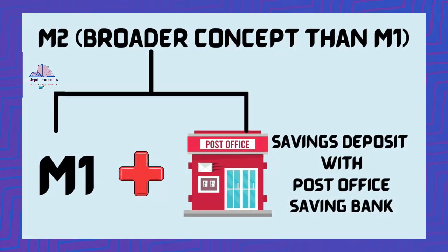The second measure of money supply is M2, which is a broader concept compared to M1. It includes M1 plus savings deposits with the post office savings bank. Post office savings banks do not provide the facility of withdrawal through checks; therefore, they cannot be included in demand deposits with banks, resulting in the evolution of M2 as a separate measure.